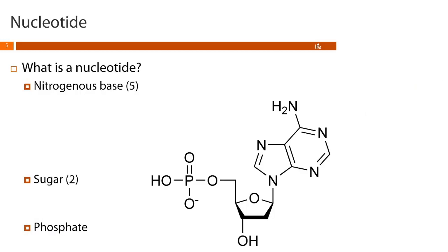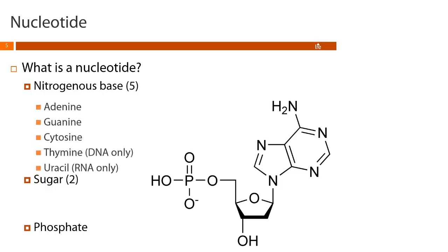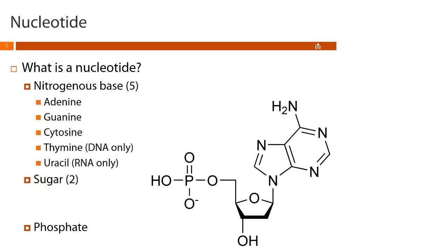From a structural standpoint, each nucleotide has three components: a nitrogenous base, a sugar, and a phosphate. There are five different nitrogenous bases. Adenine, guanine, and cytosine are found in both RNA and DNA. Thymine is found only in DNA, and uracil is found only in RNA.